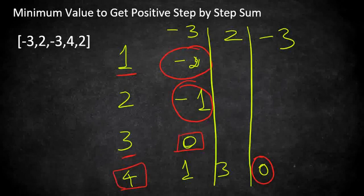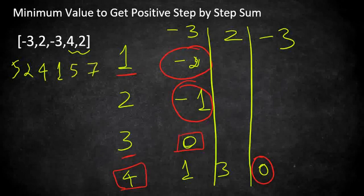Let's increment to five. Adding five with each step: five plus minus three is two, then two plus two is four, four plus minus three is one, and the remaining values are positive, giving five and seven. At no step does the value become less than one. So five is the minimum positive value we return as output.